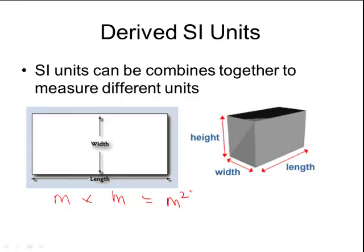If I was doing volume, which would be length times width times height, I would take a meter times a meter times a meter, those are all SI units, and then multiply them together and I get a meter cubed. So a meter cubed is also a derived SI unit.